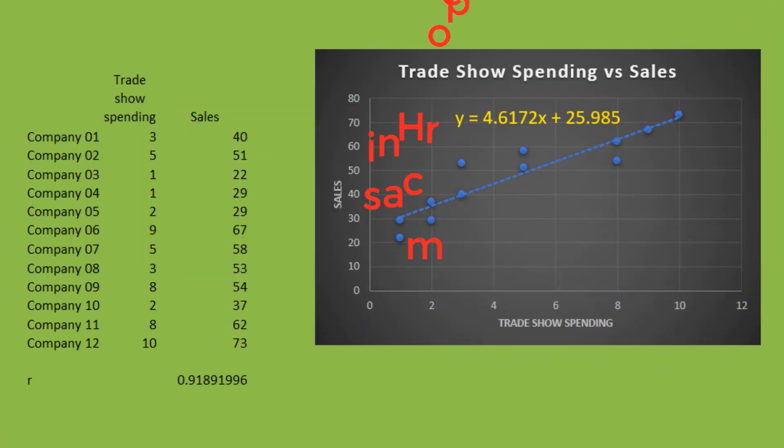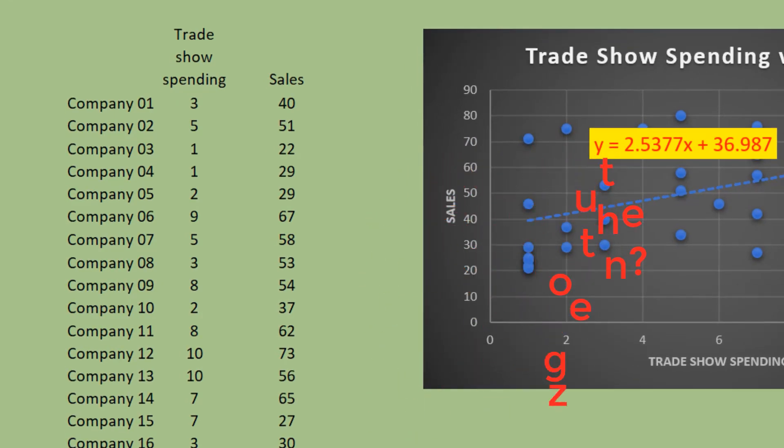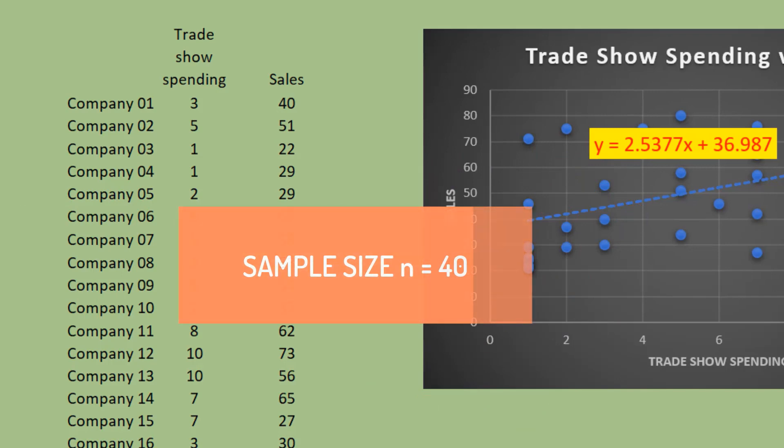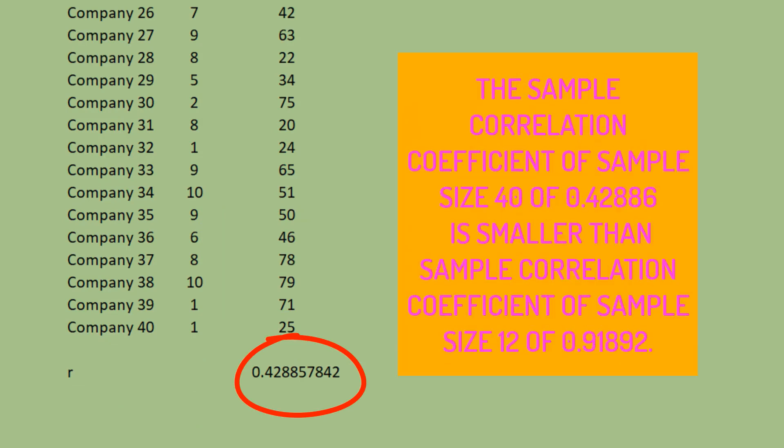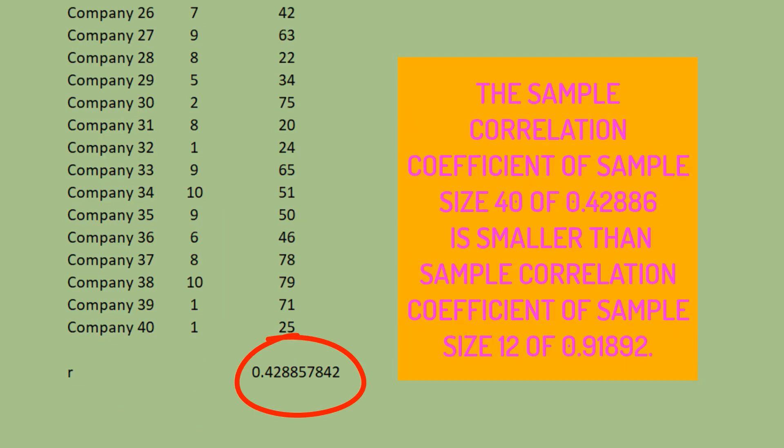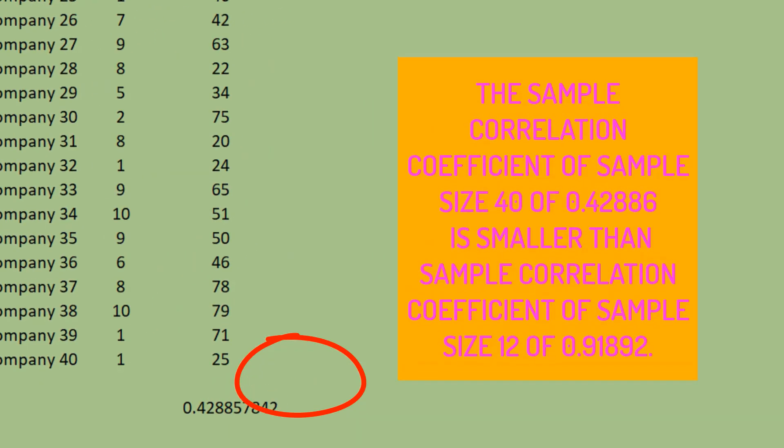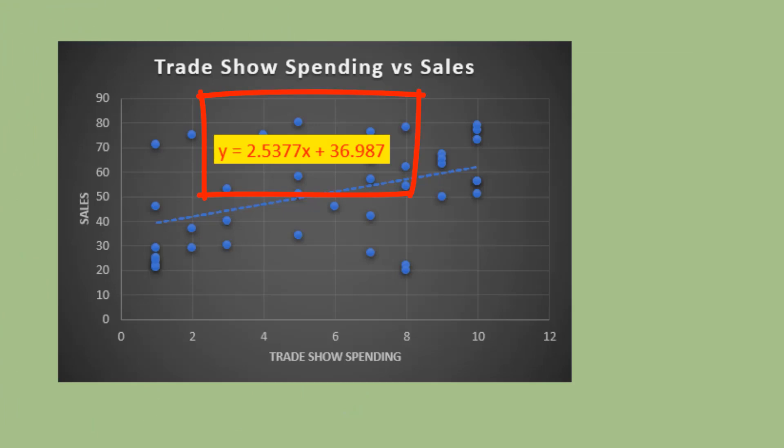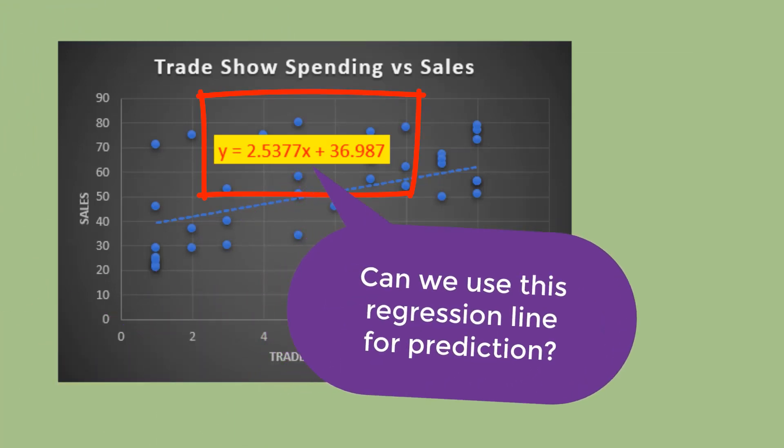Now, how about increasing the sample size? We increased the sample size to 40 companies and these are the observations we obtained. The sample correlation coefficient is now reduced to 0.42886. This is the corresponding regression line. Can we use this line for prediction?